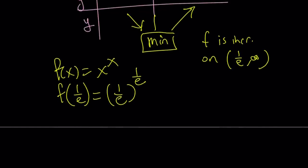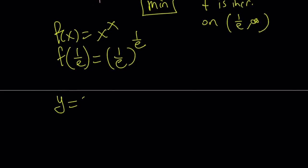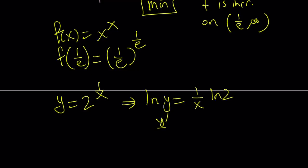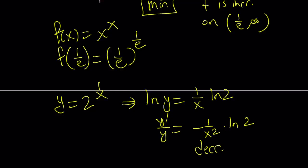Now for y equals 2 to the power 1 over x: taking ln of both sides gives ln y equals 1 over x times ln 2. Differentiating gives y prime over y equals negative 1 over x squared times ln 2. Setting the derivative equal to 0 yields no solution, so this function is always decreasing — specifically decreasing on (0, ∞) — since negative 1 over x squared is always negative and y is always positive.